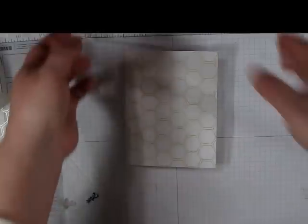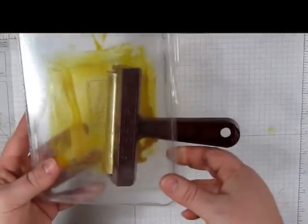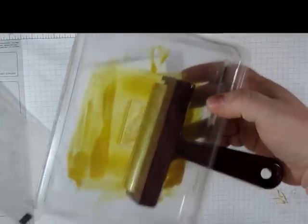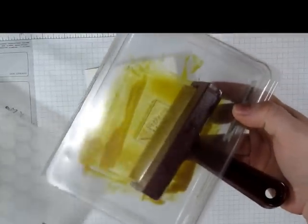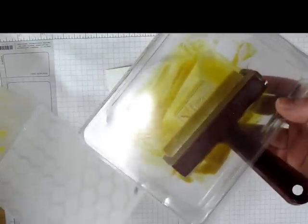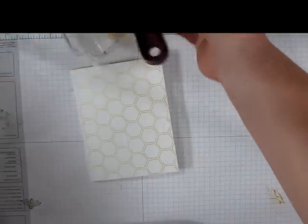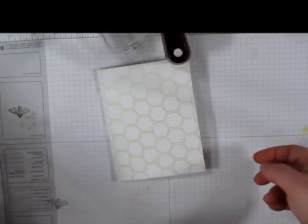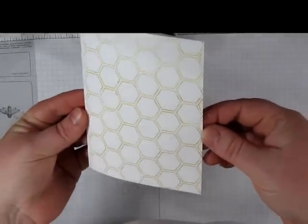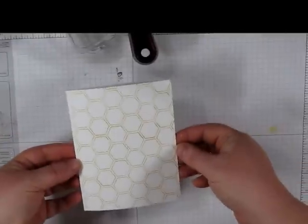Now you do want to be sure when you're done to take your brayer, your embossing folder and your clamshell case and wash them out. I just run mine underwater while it's still wet and all of the ink comes right off. So there you have it. I hope you have fun playing with this fun new embossing technique.